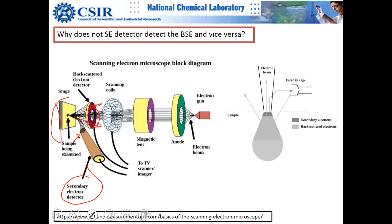Can secondary electrons reach the backscattered electron detector? Yes, they can, but the number will be minuscule and they will form an unwanted background. Backscattered electrons have strong Z contrast which does not exist in secondary electron images; secondary electrons give strong topographic contrast which is absent in backscattered electrons because the backscattered detector is symmetrically placed — not at one side — and does not give topographic advantage.